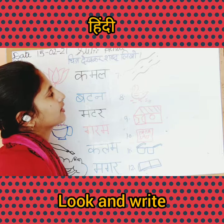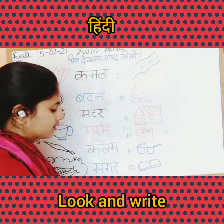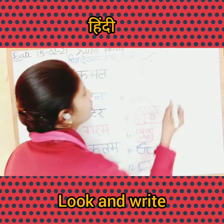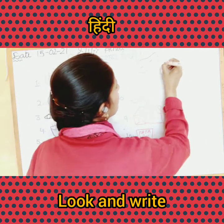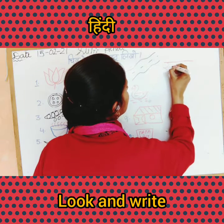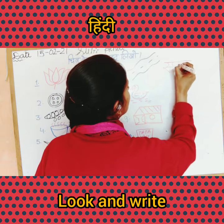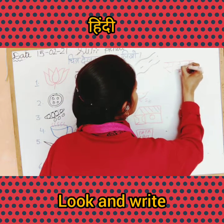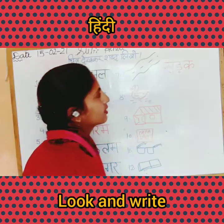Dekhi, kis-ki picture hai? Sa-la-k. Now you have to write on the seventh number: Sa-la-k.